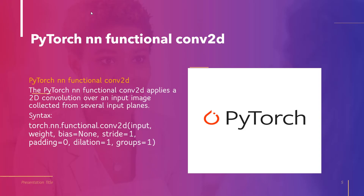Now let's move forward and discuss about PyTorch NN Functional Conv2D. PyTorch NN Functional Conv2D applies a two-dimensional convolution over an input image collecting from several input planes. The syntax is torch.nn.functional.conv2d function, and within this function we are using some parameters.